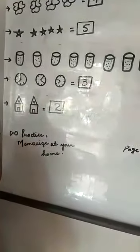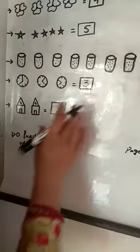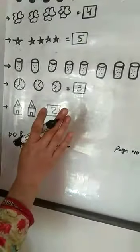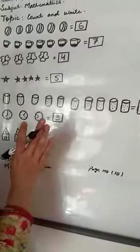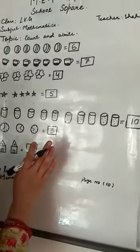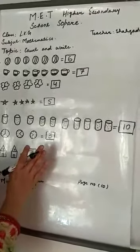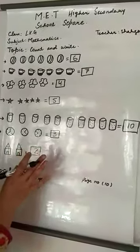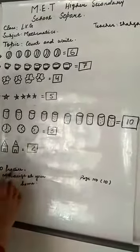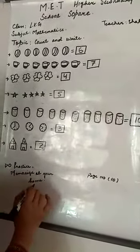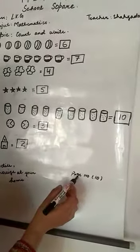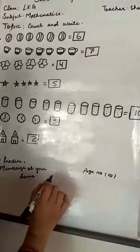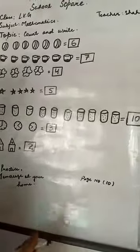देखो बच्चो, यह अच्छी तरह से करना है। जो school की notebook है उसी पर लिखना है — Mathematics book है। अच्छी तरह से copy पर लिखना है, साफ साफ लिखना है। Do practice, memorize at your home. यह book का page number 10 है। Okay!